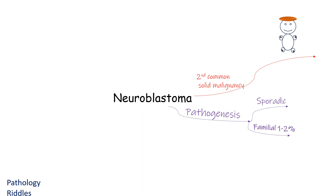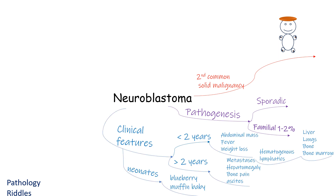Coming to pathogenesis: one to two percent of cases are familial, with autosomal dominant transmission. There is a germline mutation in the ALK gene, which is anaplastic lymphoma kinase. Additionally, eight to ten percent of sporadic cases also show ALK mutation.